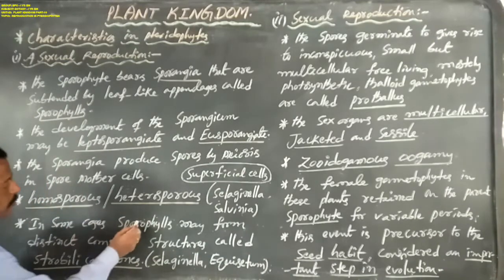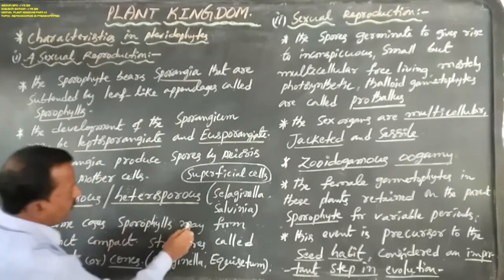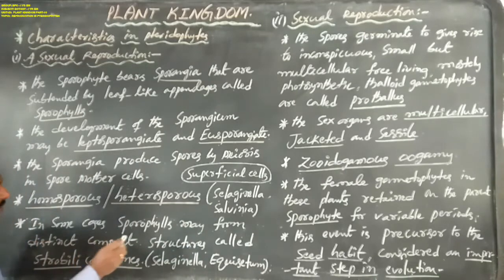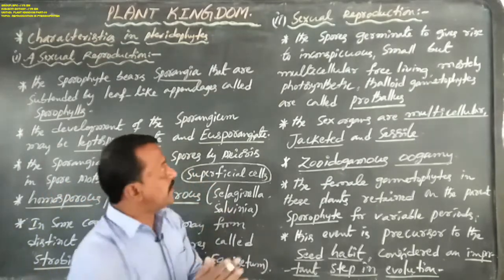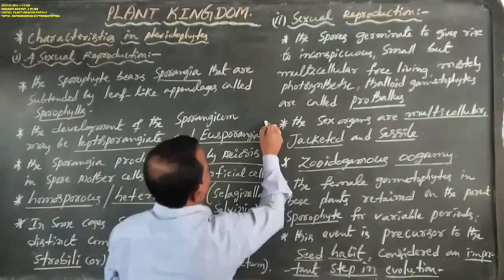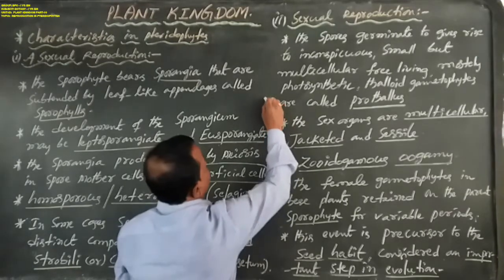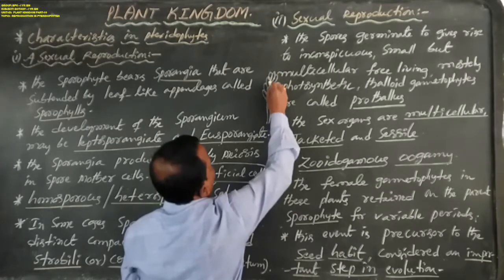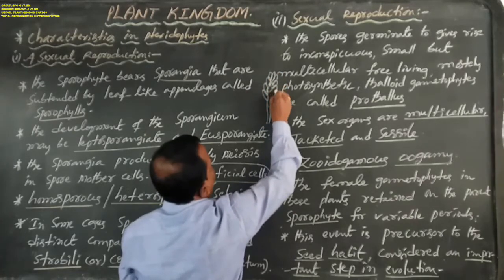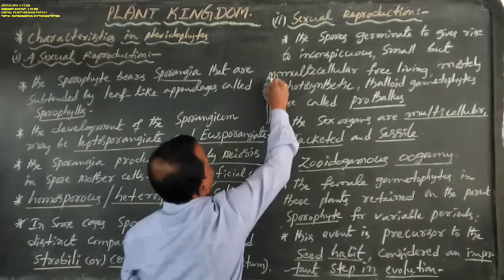In some cases, sporophylls may form distinct compact structures on the sporophyte axis. These sporophylls may be closely packed together to form a distinct compact structure.